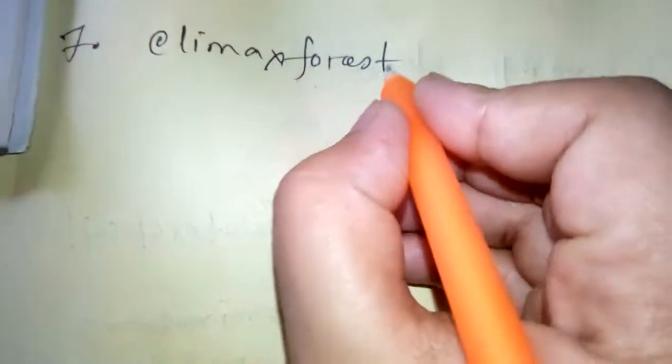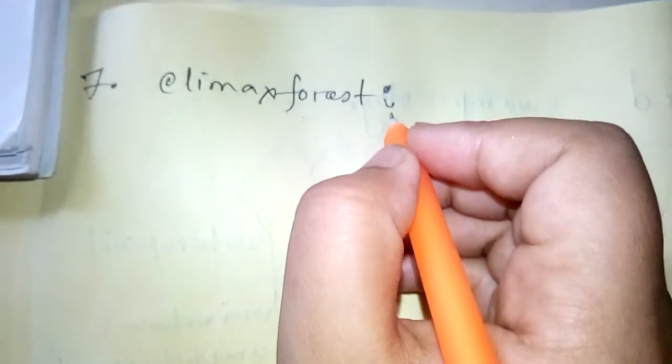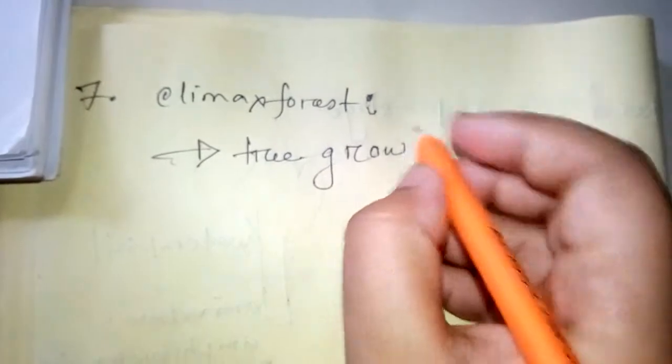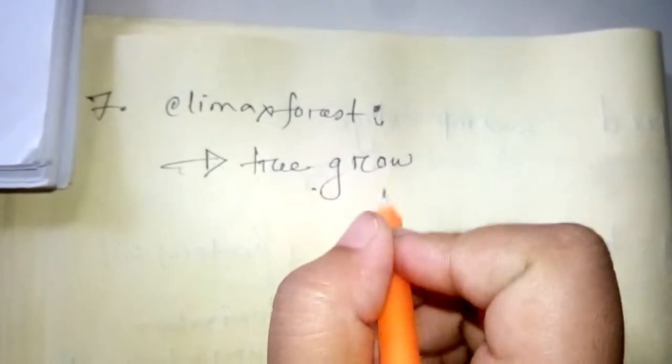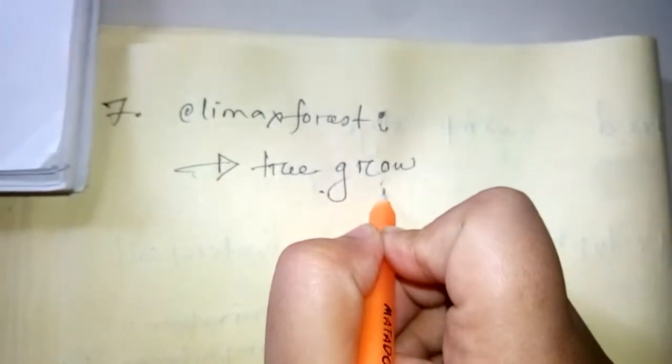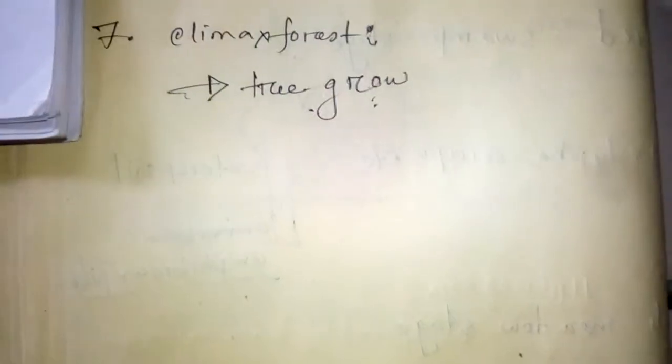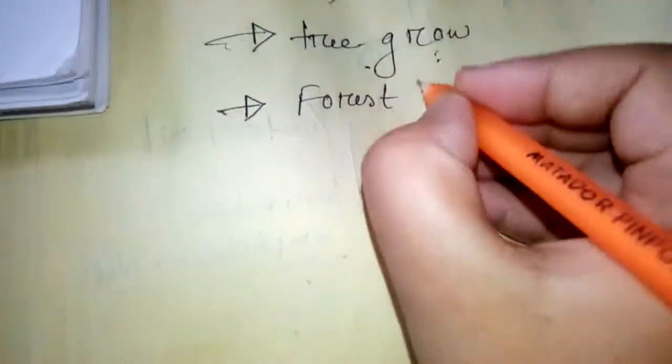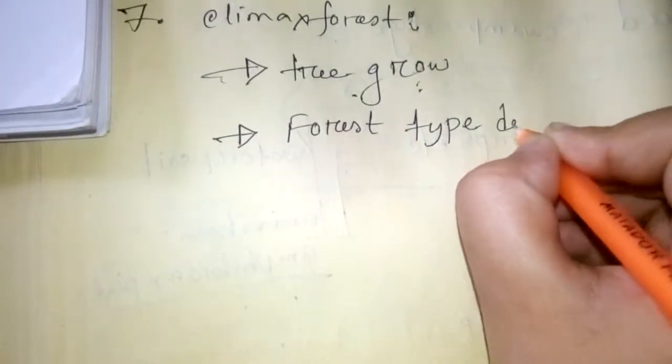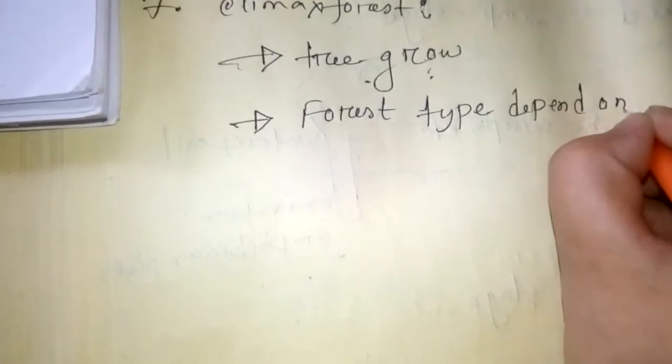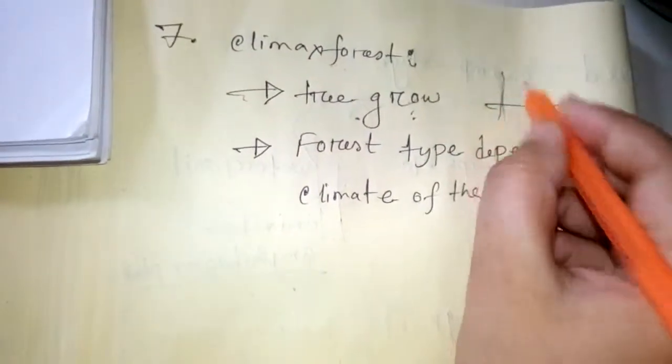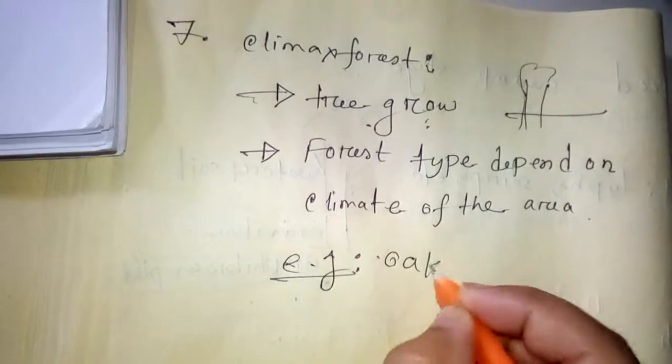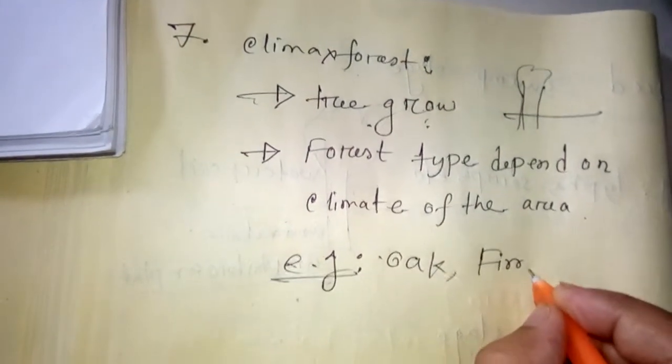The last stage is climax forest. Climax forest is a stage where trees grow. Trees are harder, hard and long, more than herbs and shrubs. Why is it called climax forest? Because forest type depends on climate of the area. Examples of those tree plants are oak, fir, ash, etc.